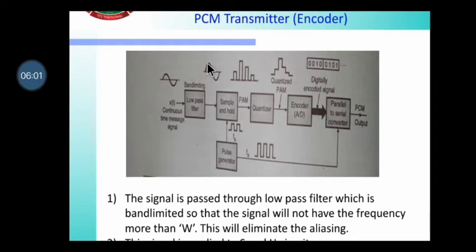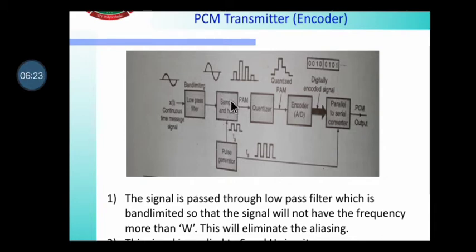The band-limited continuous signal is then broken using a sampling technique. There are different sampling techniques: natural sampling and flat-top sampling. We are using flat-top sampling here. For flat-top sampling, we use a sample-and-hold circuit made from two FETs. This block is named the sample-and-hold technique.